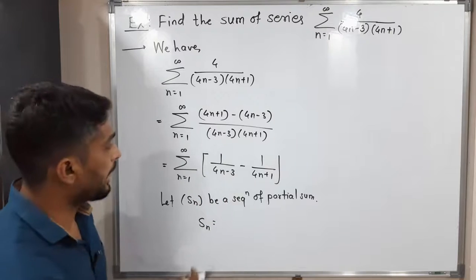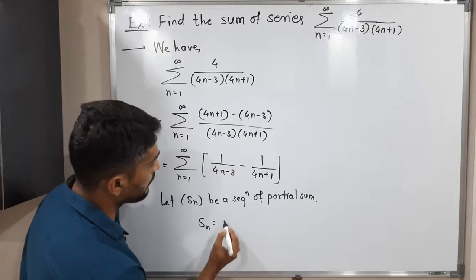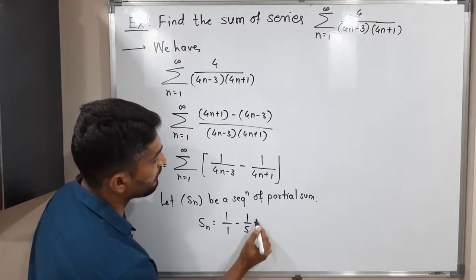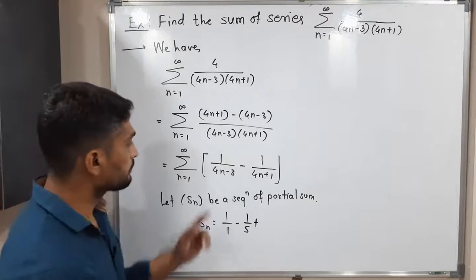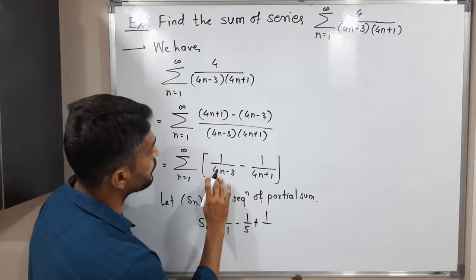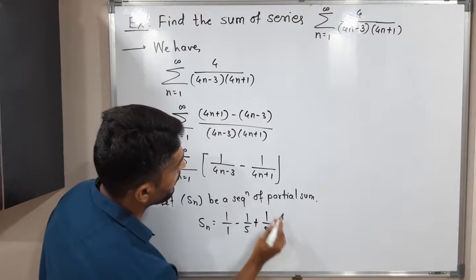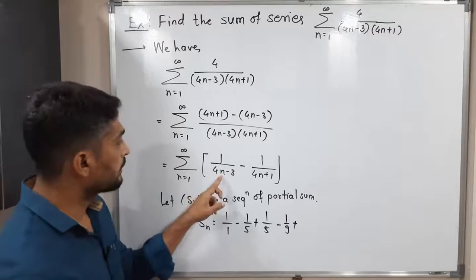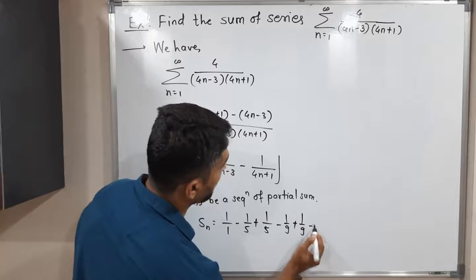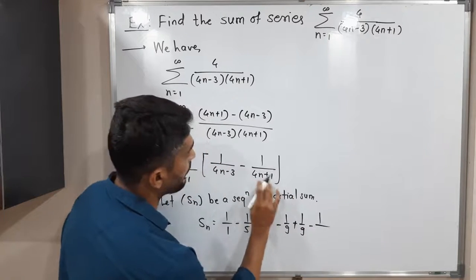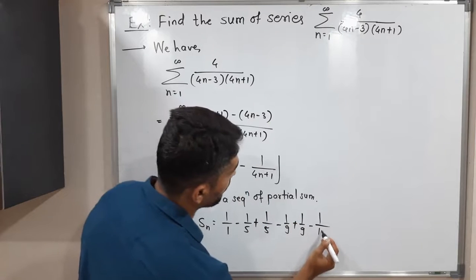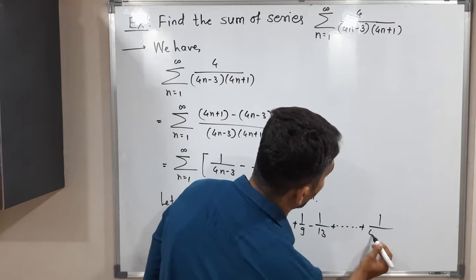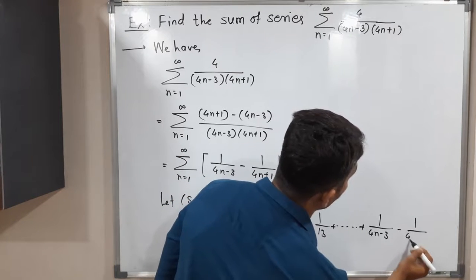Putting n equal to 1: we get 1 upon (4 minus 3) minus 1 upon 5, which is 1 minus 1/5. Putting n equal to 2: we get 1 upon 5 minus 1 upon 9. Putting n equal to 3: we get 1 upon 9 minus 1 upon 13, and so on. The last term is 1 upon (4n minus 3) minus 1 upon (4n plus 1).